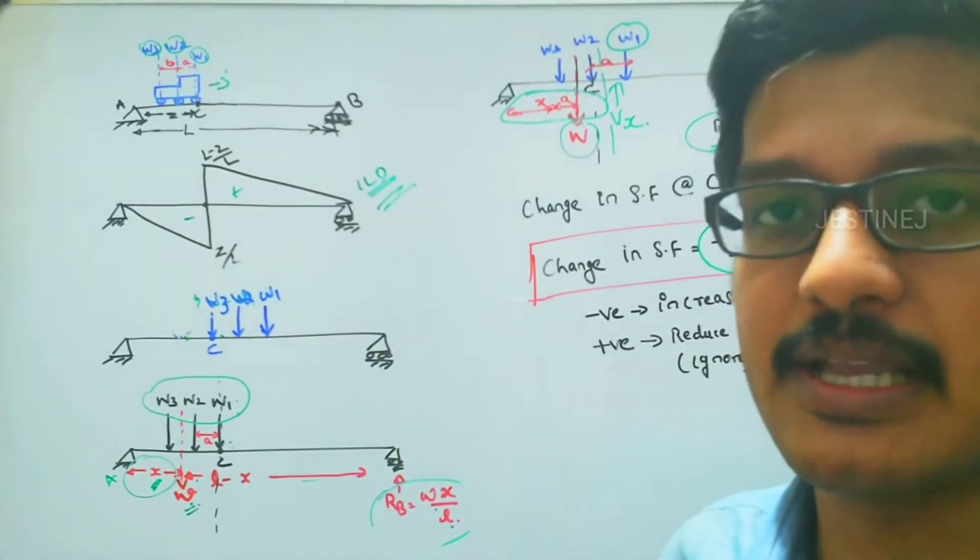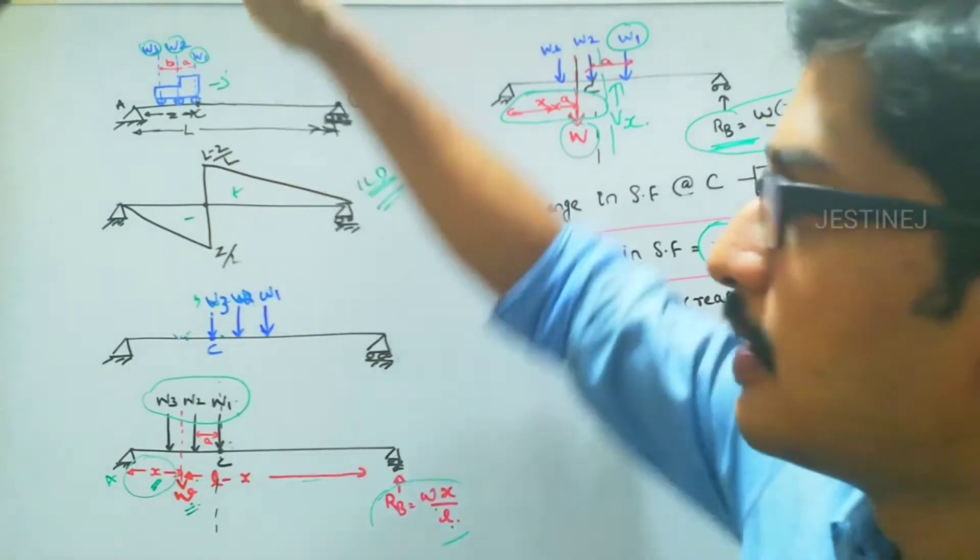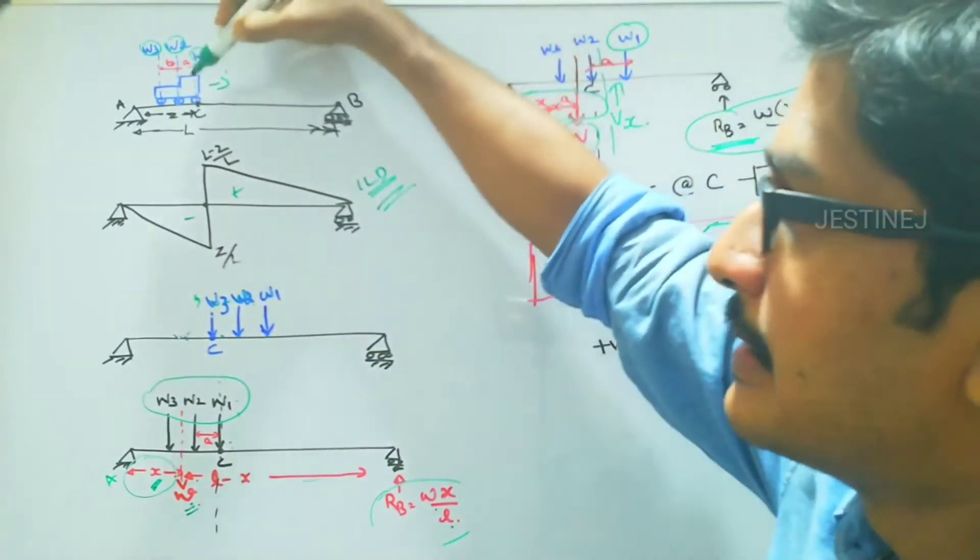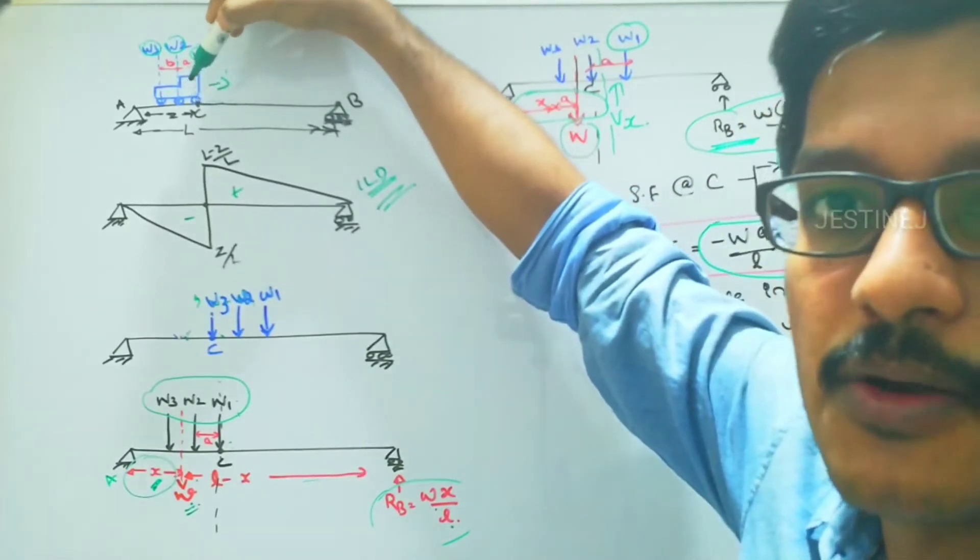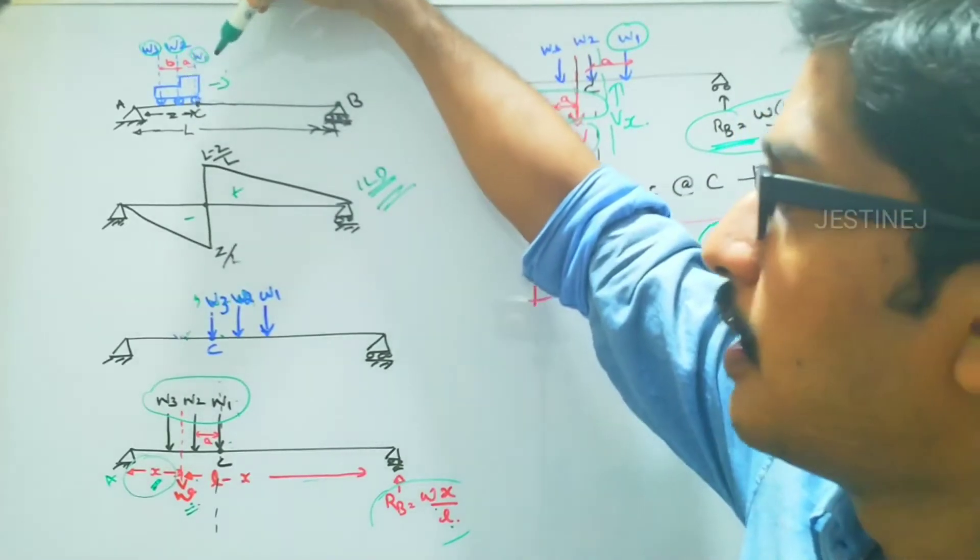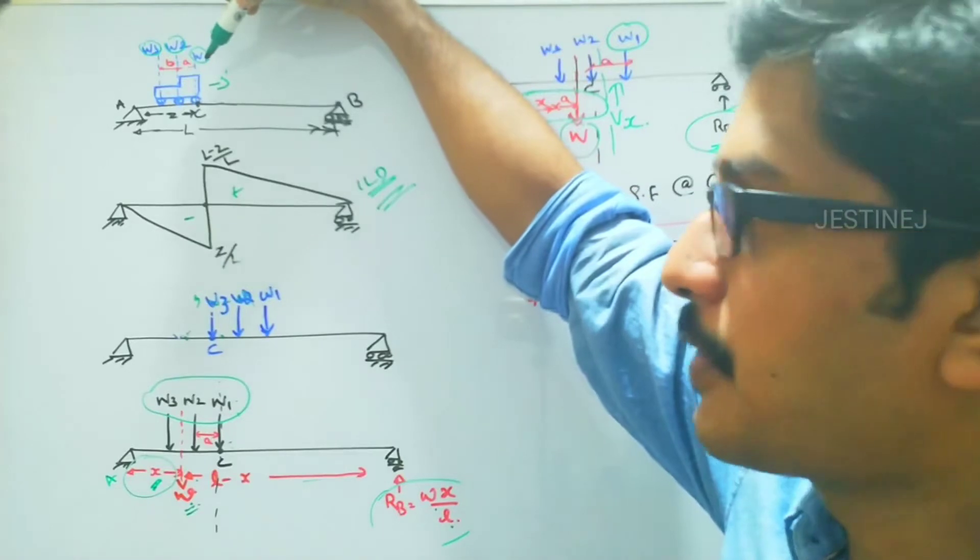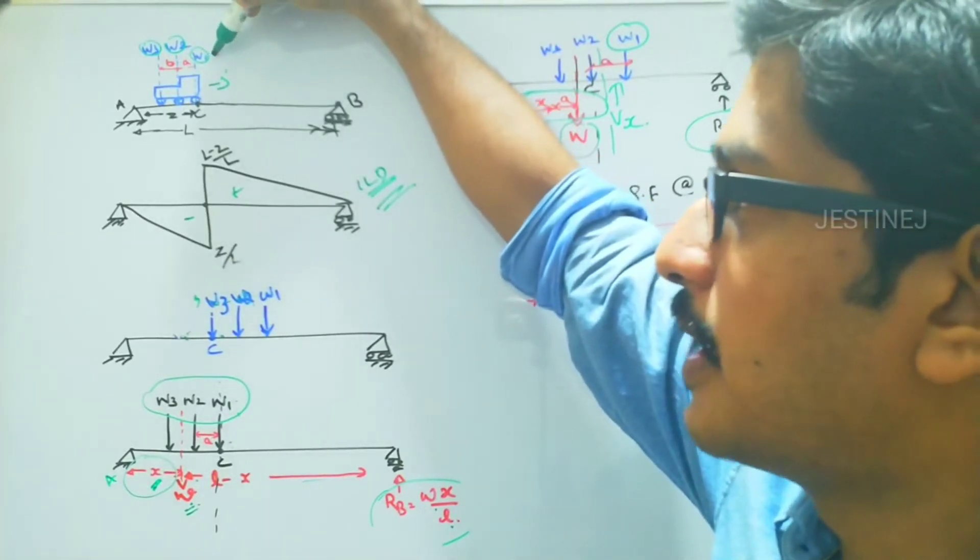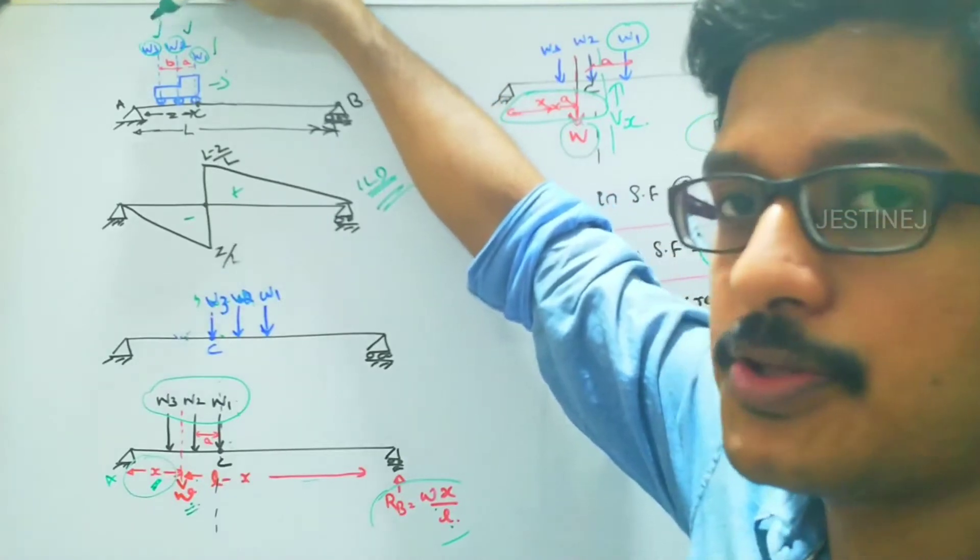Let us take the situation of a truck crossing a bridge. Let us assume this is a truck. It is passing over a bridge, then each axle point will act as the concentrated loads. Depends upon the number of tires, the weight will be varying. So let us consider the weights W1, W2, and W3.